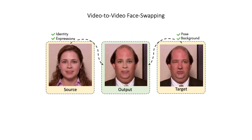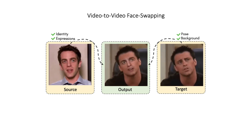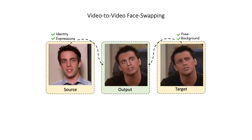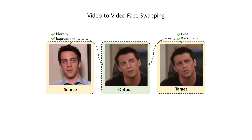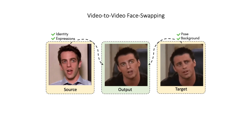Now we look at some outputs. Please note that all the face-swapped outputs are on identities unseen at the time of training. In this example, we swap faces with drastic differences in facial structure and expressions. In another example, the source and target have very different facial structures and head motions. Even though the head poses have changed, Face Off is able to generate a coherent identity and pose in the output.